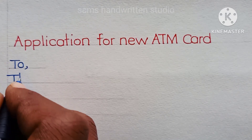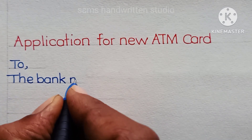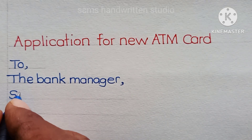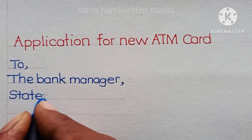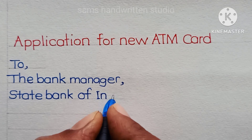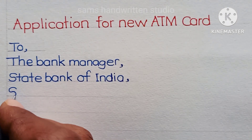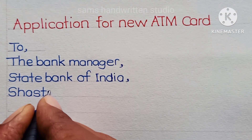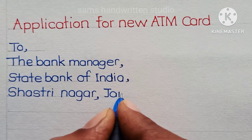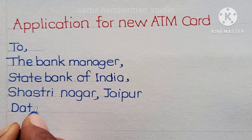First of all, in the left side corner, write 'To, The Bank Manager, State Bank of India, Shastri Nagar, Jaipur,' and then the date.